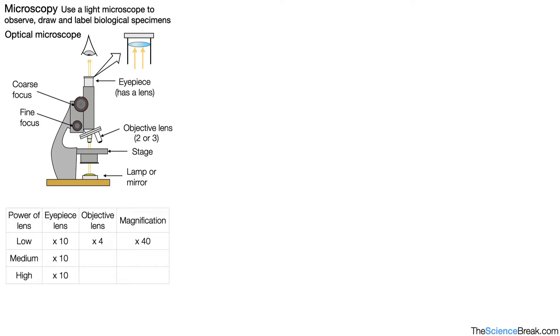The medium objective lens is often times 10, so that will give us a magnification of 10 times 10 which is 100. And the high power is often times 40, and that will give us a total magnification of times 400.